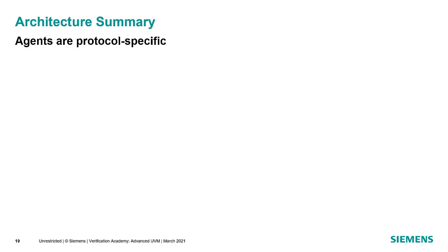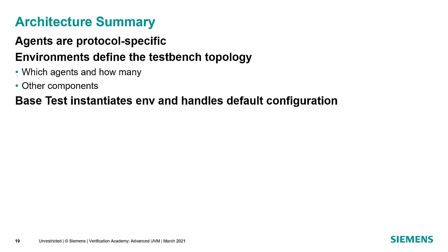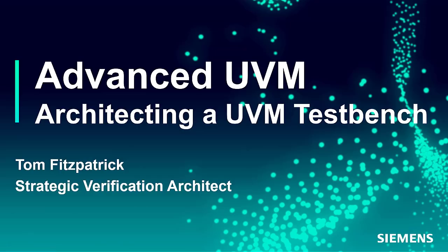To summarize: agents are protocol-specific, containing a sequencer, driver, and monitor, used to control a single interface to your DUT. Environments are components that define test bench topology — specifying which agents, how many instances, and any other components like coverage collectors or scoreboards. We create a base test to instantiate the environment and handle default configuration like virtual interfaces, then extend it to define actual tests where we tweak configuration or factory settings, start sequences, and manage objections. Stick with basic phasing, especially using only the run phase task for your components, as other runtime task phases are being considered for deprecation.